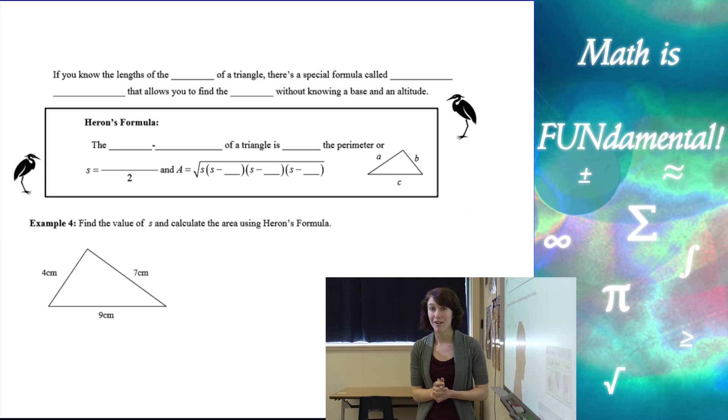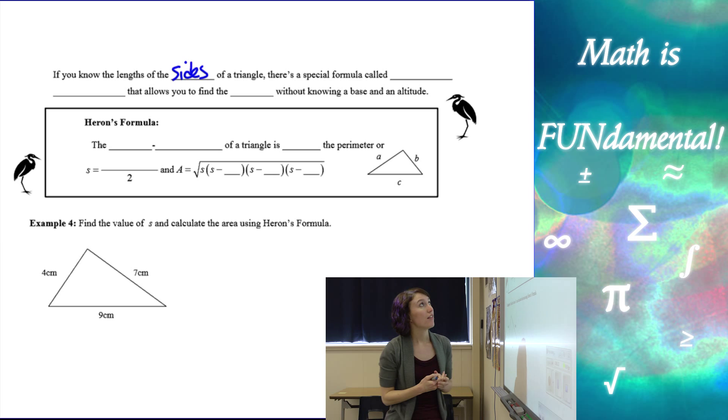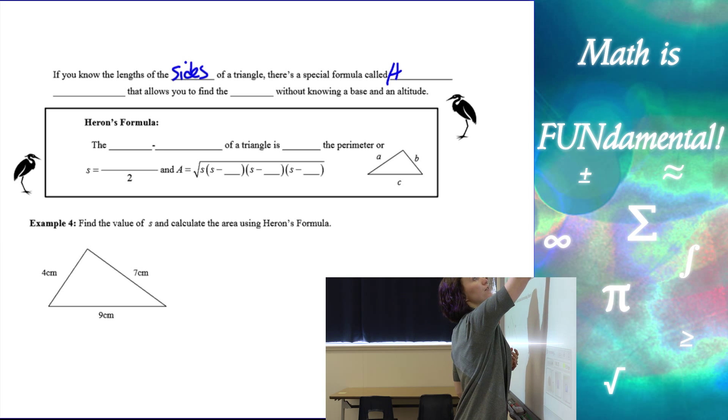Now let's talk about Heron's formula. So this formula is really different. It looks really complicated. But once you practice, you'll get the hang of it. So here, if you know only the sides of a triangle, then there's a special formula called Heron's formula.